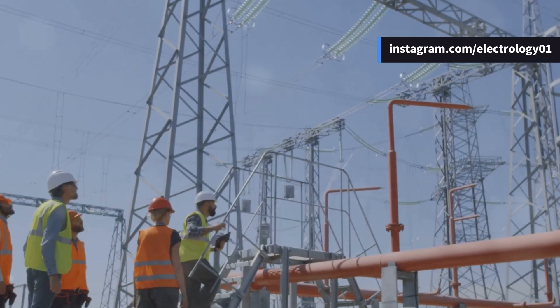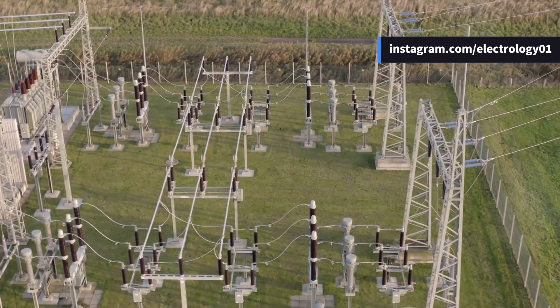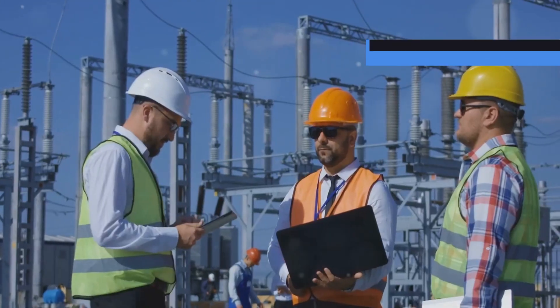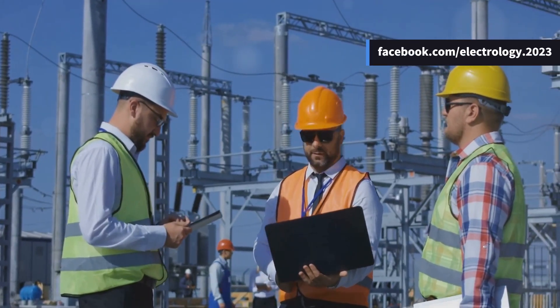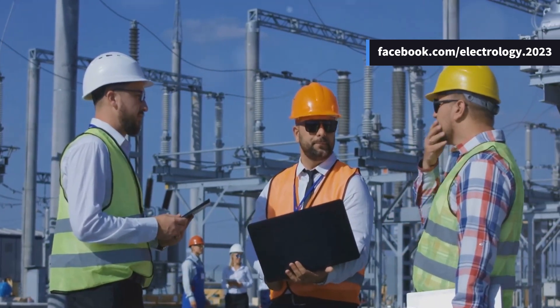This setup allows for minimum outage during maintenance. Less area requirement. Compared to the two main and transfer bus scheme, the one and half breaker arrangement requires less area. Cost effective. This system is more cost effective than the two main and transfer bus scheme.